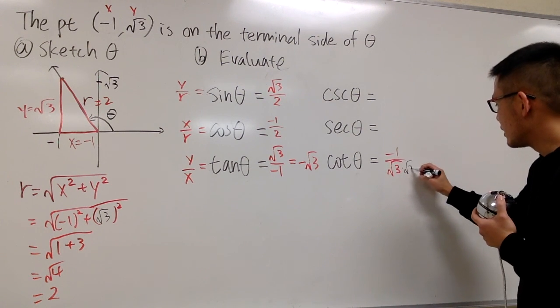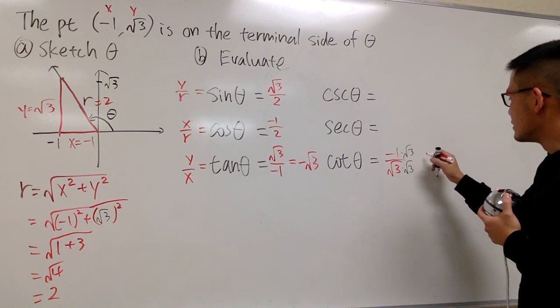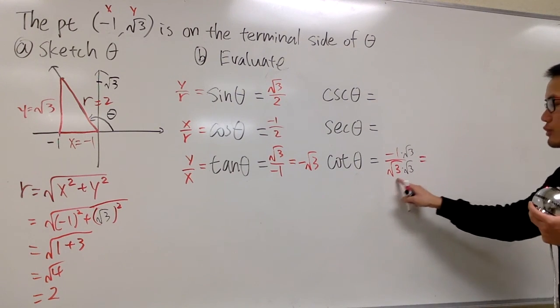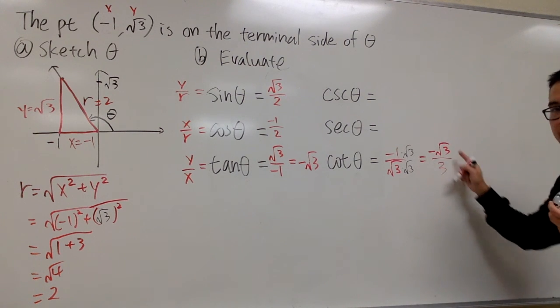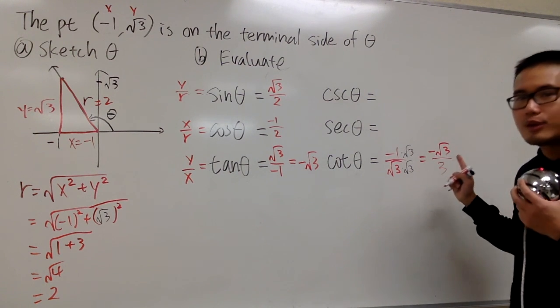Okay, so you just multiply by square root of 3 on the bottom and also on the top, and you see that square root of 3 times square root of 3 is just a 3. On the top, you have negative square root of 3. And this will be the final answer that you're going to present to us.